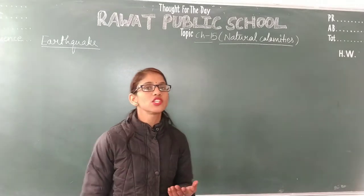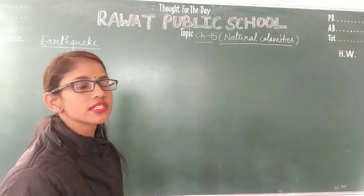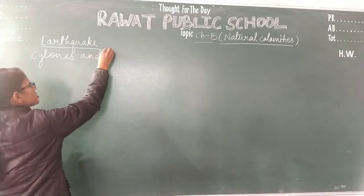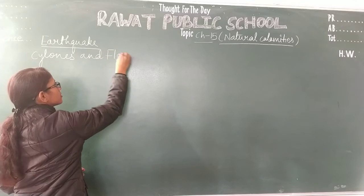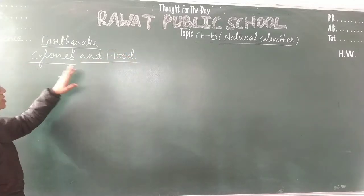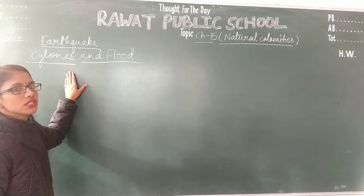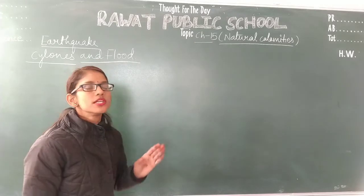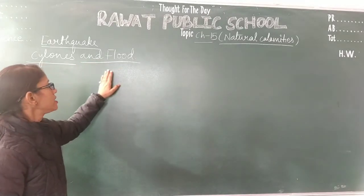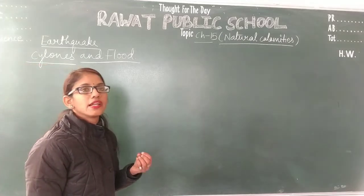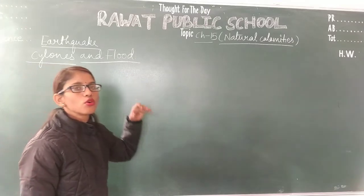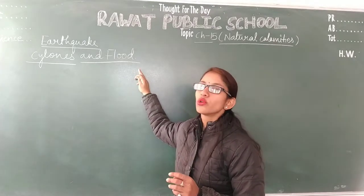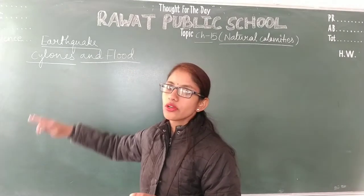Today we will discuss about the other natural calamities, which are cyclones and floods. Cyclones can be seen in the coastal areas and result from rising sea water levels, leading to submerging of coastal areas. Floods are caused when there is accumulation of rain water over the land, and they lead to lots of destruction of human life and property.